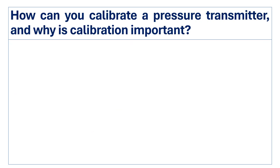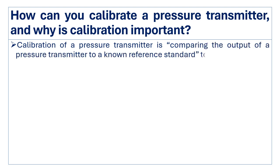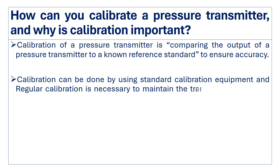How do you calibrate a pressure transmitter, and why is calibration important? Calibration of a pressure transmitter involves comparing its output to a known reference standard to ensure accuracy. Calibration can be done using standard calibration equipment, and regular calibration is required to maintain the transmitter's accuracy over time.